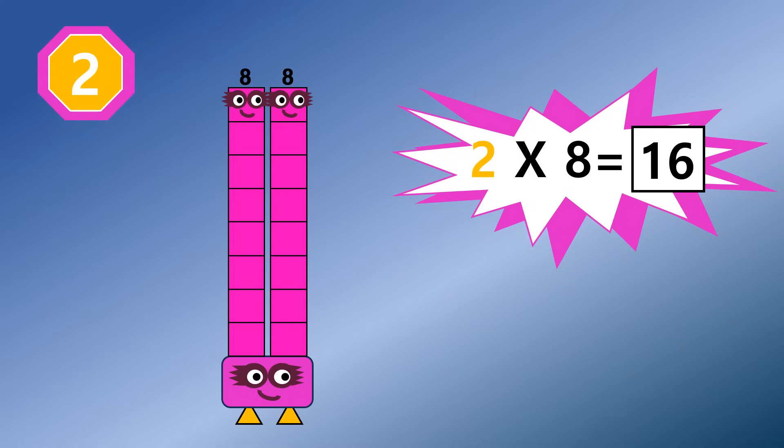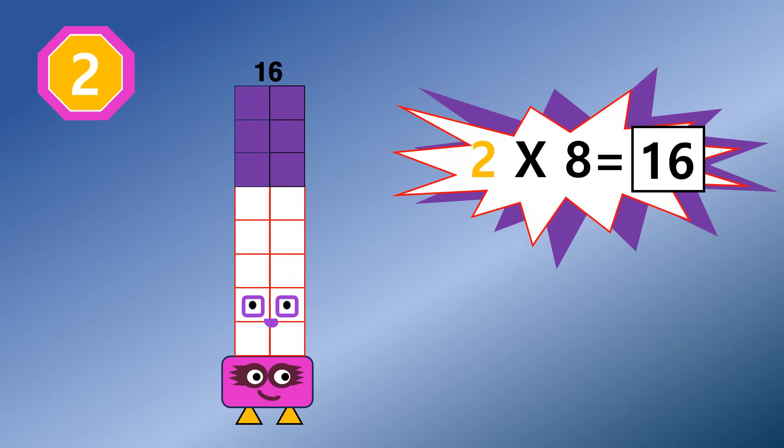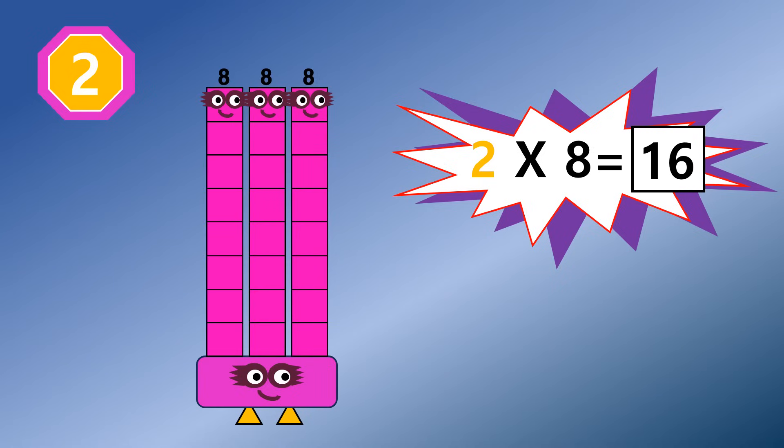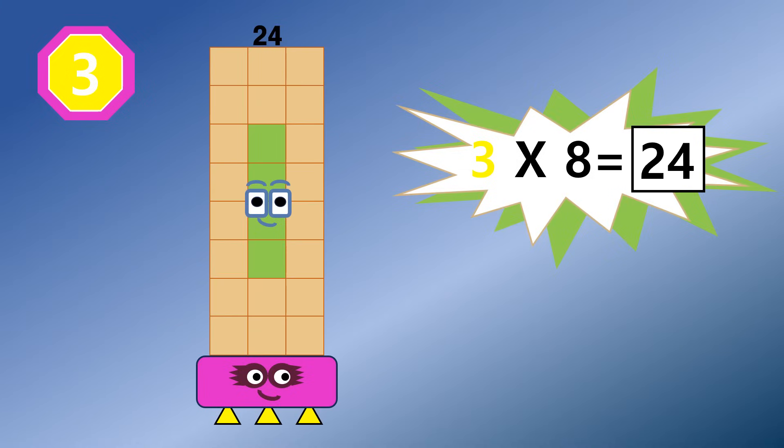Two 8 are 16. 16 the party square. Three 8 are 24. Racing rectangles galore.